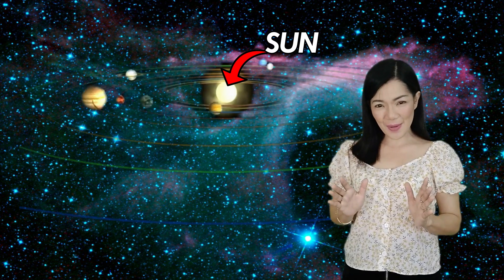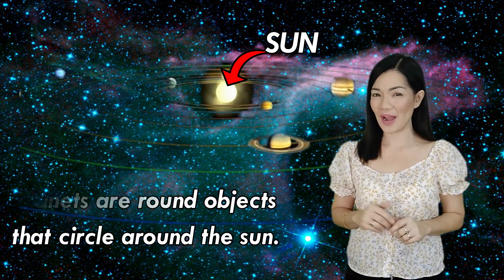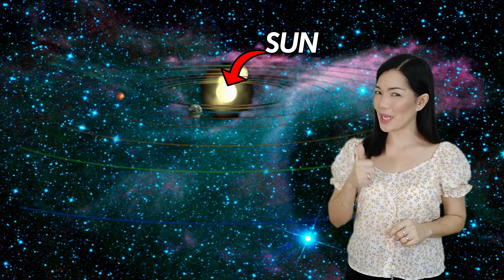Good job! To summarize, planets are round objects that circle around the sun. Pretty simple, yeah?